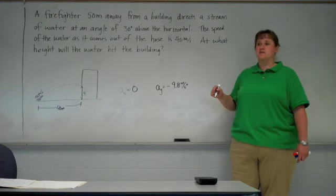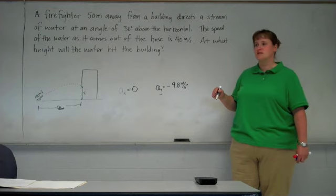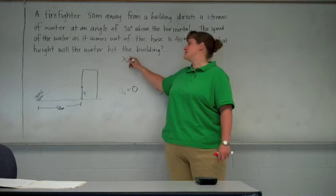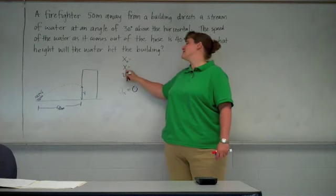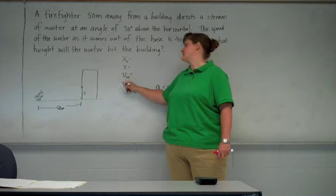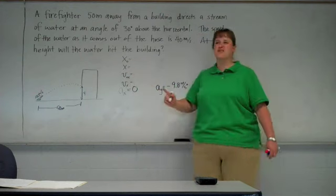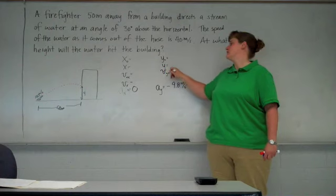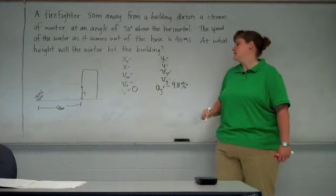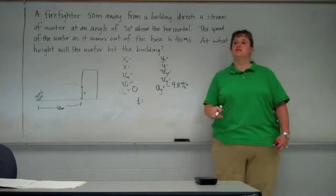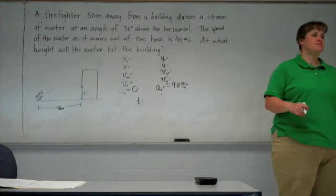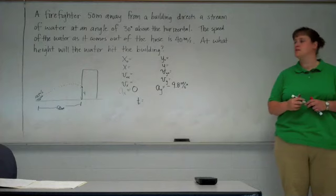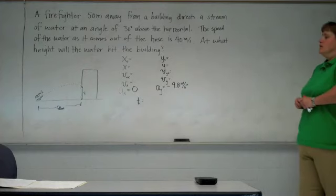That means we can use our kinematic equations. So, we're going to approach this similarly to the way we approach the others. Let's write down our variables that show up in the kinematic equations. The difference is we're going to have two lists. One list for the x information. One list for the y information. Time is the only thing they share. Time is the only thing they have in common. So, I'm only going to write time once. If you want, you can put time in both columns. Just remember it's the same for both of them.